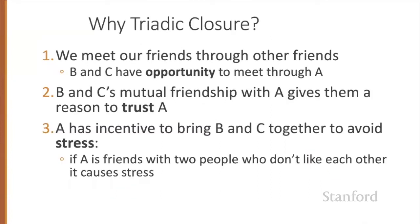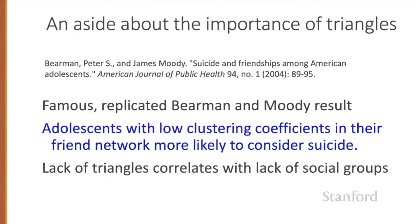Why does triadic closure happen? It could be opportunity — we meet our friends through other friends, and B and C have the opportunity to meet through A. Or it could be trust — B and C's mutual friendship with A gives them a reason to trust each other. Or A has incentive to bring B and C together to avoid stress, since being friends with two people who don't like each other could be stressful. This has been studied for mental health: Beerman and Moody found that teens with low clustering coefficients in their friend network are more likely to consider suicide, possibly because lack of closed triangles correlates with lack of social group support.